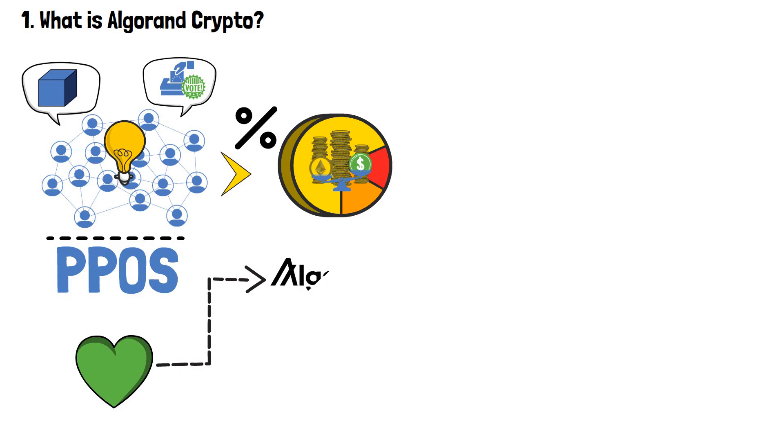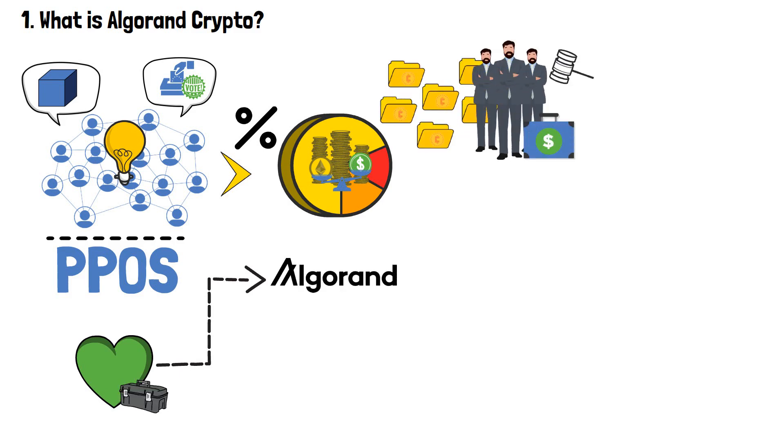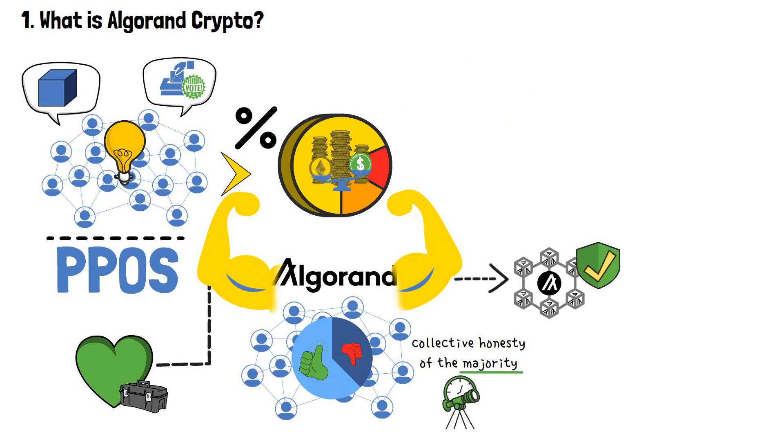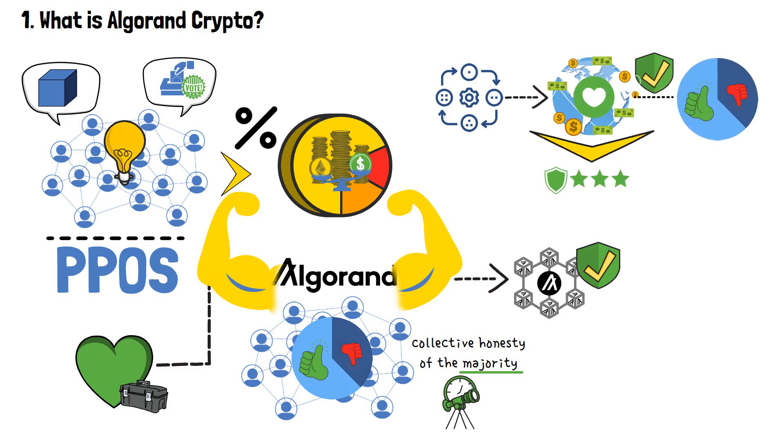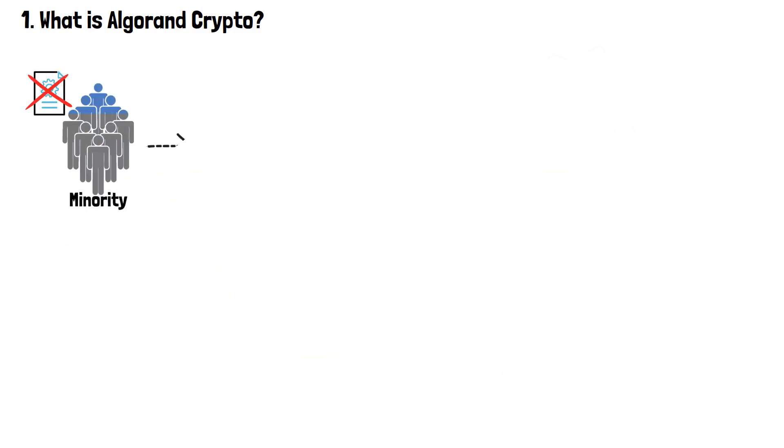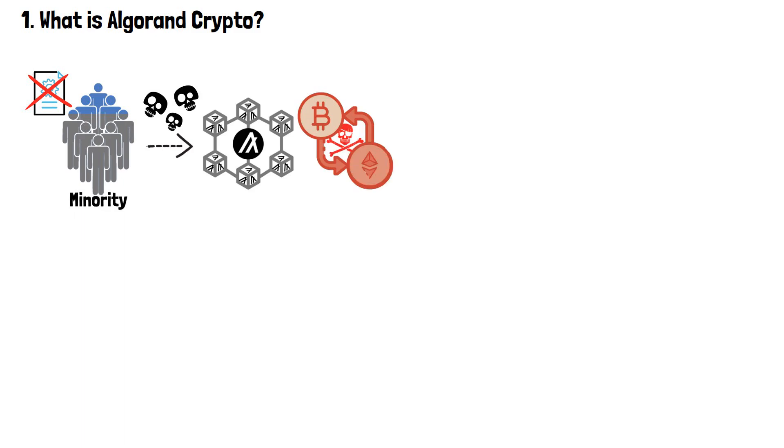The usage of PPOS allows users to understand the values on which the Algorand project was built. Unlike other approaches where a small subset holds the power to dictate security, Algorand's strength lies in the collective honesty of the majority. This dynamic ensures that the system remains secure as long as the majority acts with honesty and good faith. In this model, the security of the whole economy rests on the shoulders of the honest majority, reinforcing the trust and stability of the Algorand ecosystem. The actions of a minority hold no power to disrupt the network or hinder transactions.